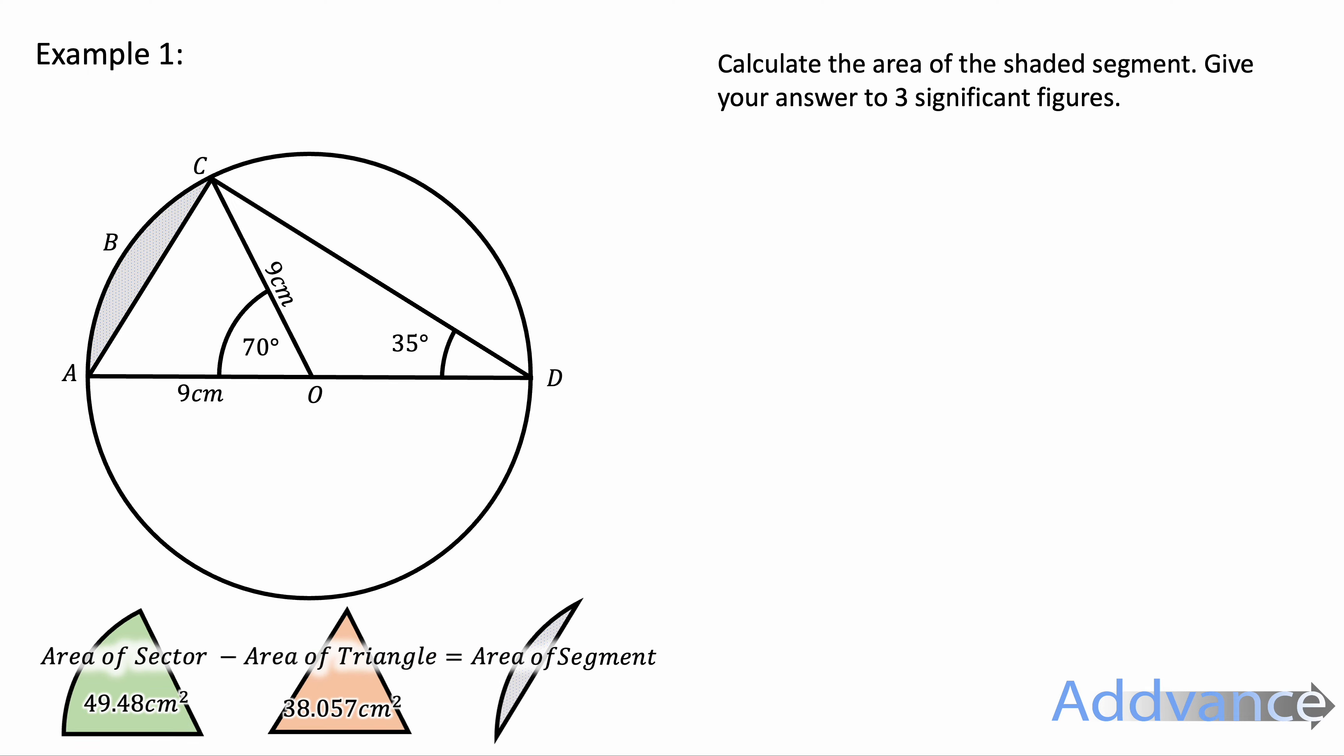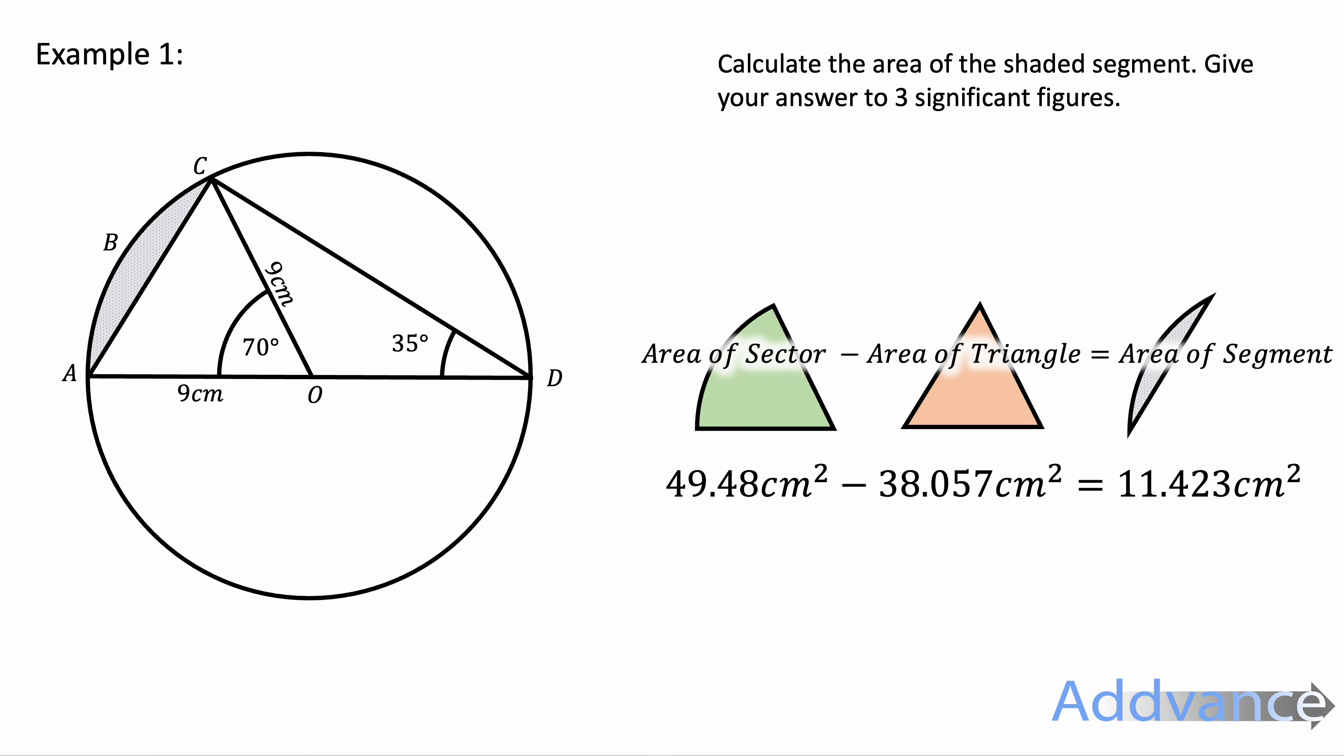Finally, I can just subtract those two areas and get 11.423cm squared. But I want to round it to three significant figures, so I get 11.4cm squared.